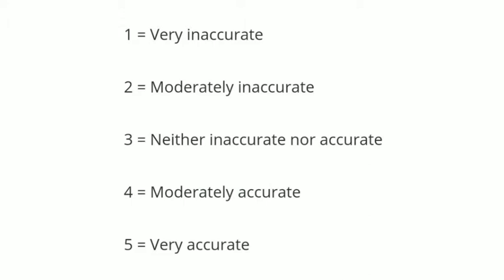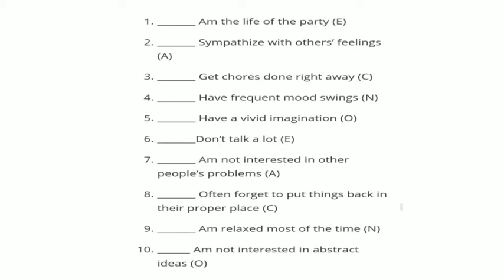These are the five rating scales: 1 stands for Very Inaccurate, 2 for Moderately Inaccurate, 3 for Neither Inaccurate Nor Accurate, 4 for Moderately Accurate, and 5 for Very Accurate. I will now give you examples using the first statements.